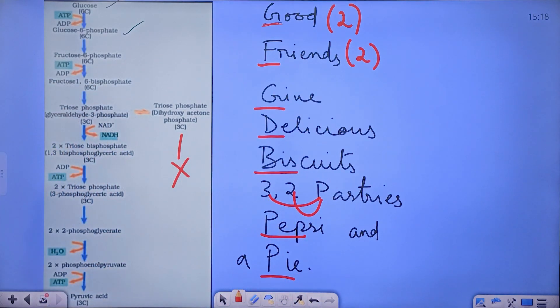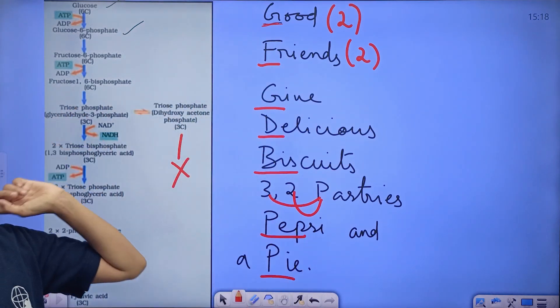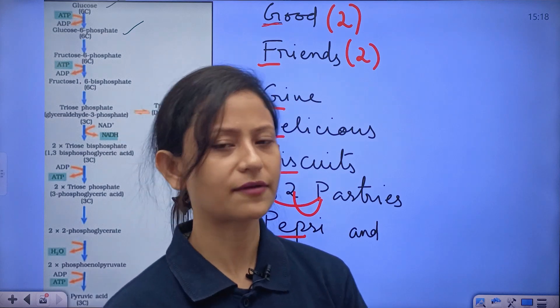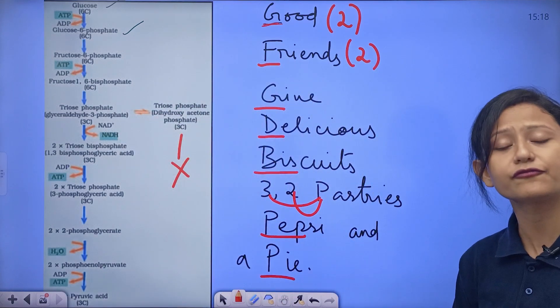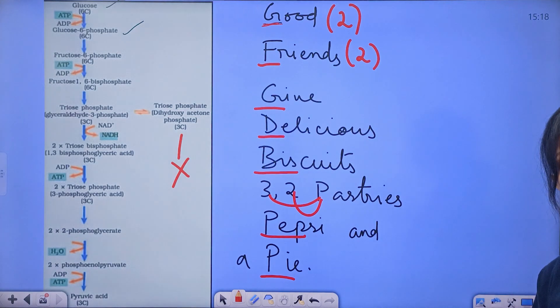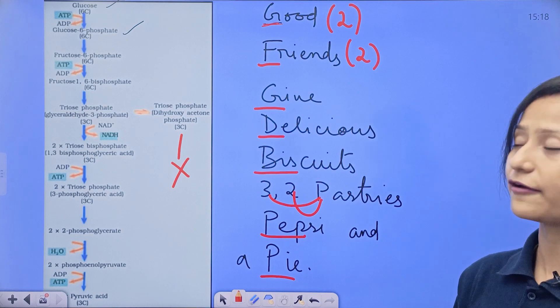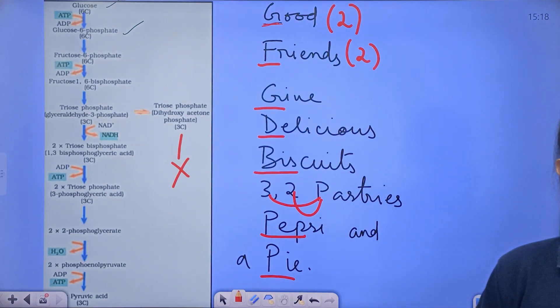Let's see: good friends give delicious biscuits, 3,2 pastries, Pepsi and a pie. Let us write down this with the help of this mnemonic. G stands for good, G stands for glucose, G stands for glucose 6-phosphate. Then glucose 6-phosphate breaks down into F: F for friends, F for fructose 6-phosphate.